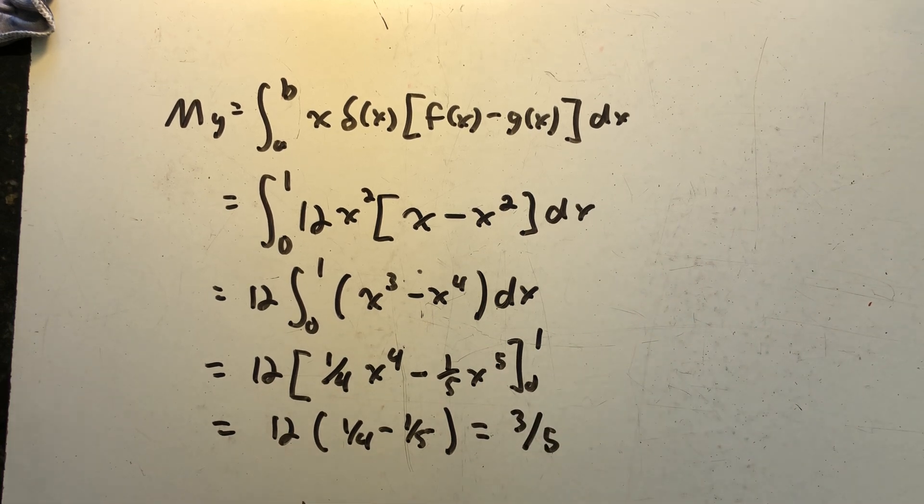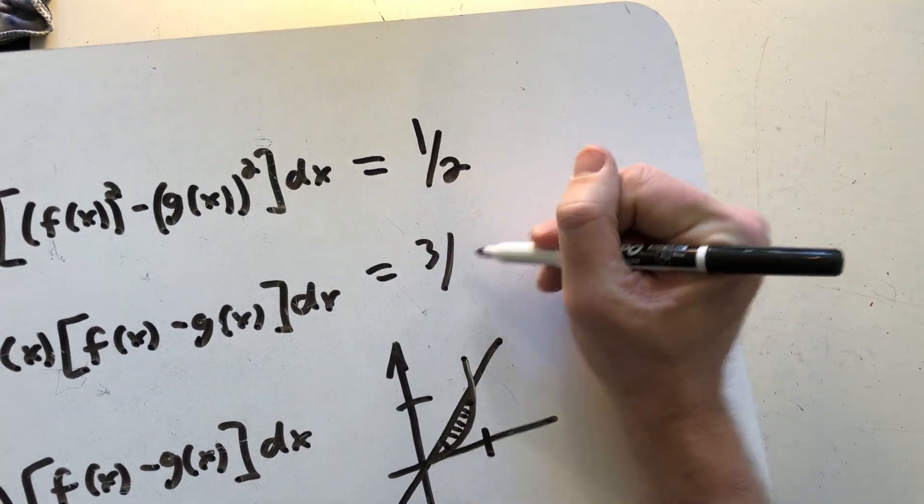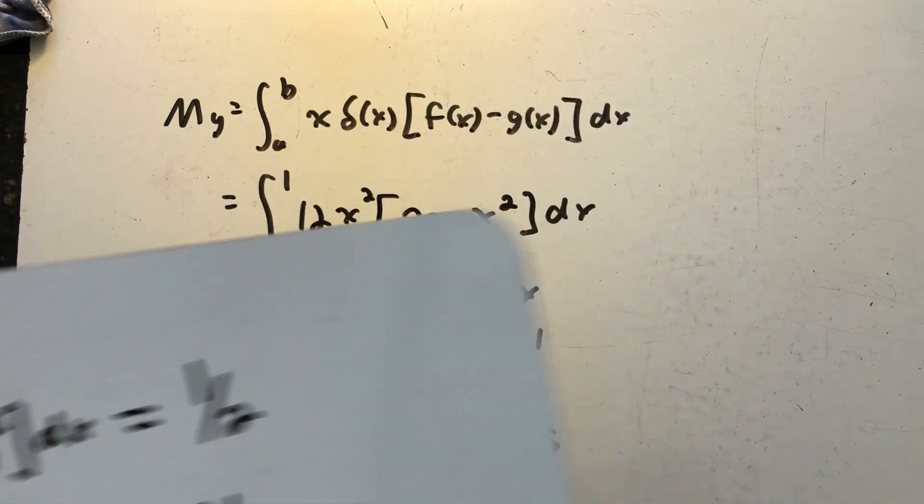And when we work all of that out we find out that we get three fifths. The moment about the y-axis is three fifths. I'm going to come back here to the original board and mark that down.